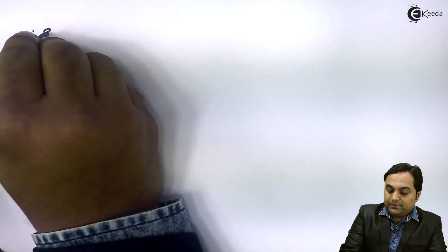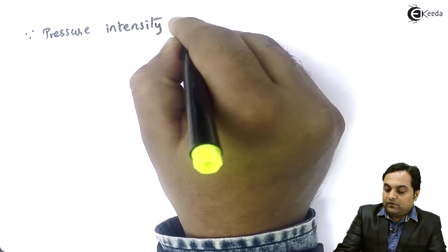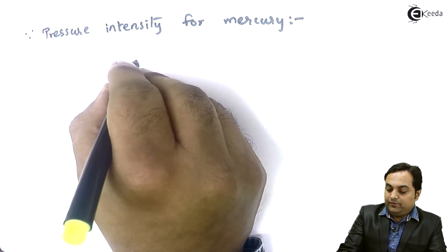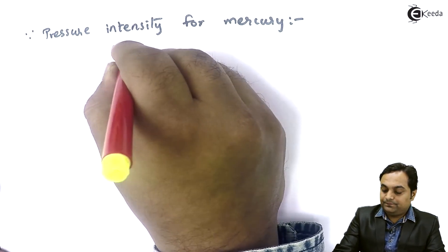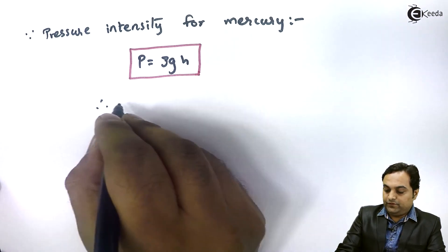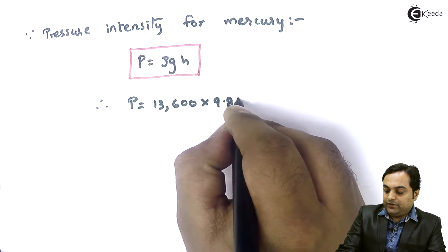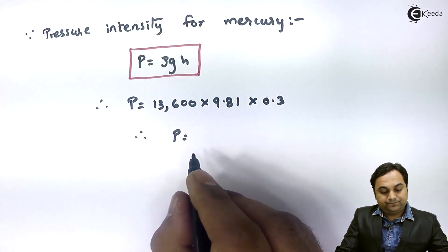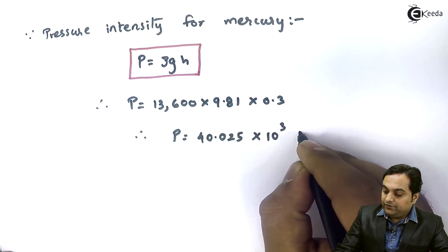Now I'll calculate pressure intensity for mercury using the same formula: P equals rho times G times H, from hydrostatic law. Therefore, P equals 13600 into 9.81 into 0.3, and the pressure intensity comes out to be 40.025 into 10 raised to 3 Newton per meter square.